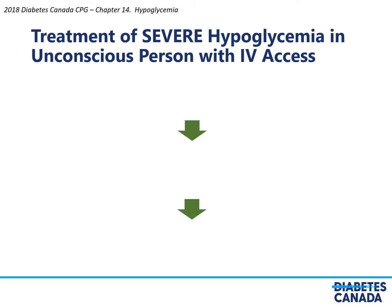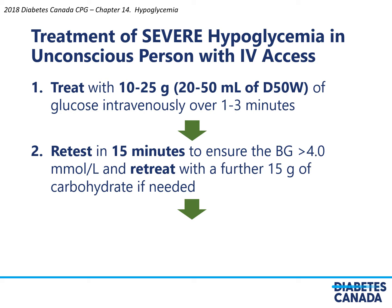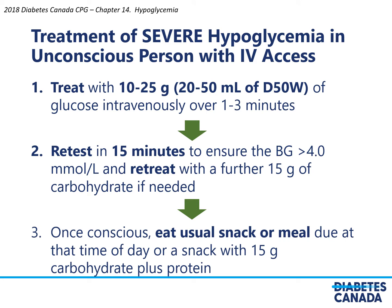Treatment of severe hypoglycemia in an unconscious person who has intravenous access should include 10 to 25 grams of glucose intravenously over 1 to 3 minutes, equal to 20 to 50 ml of D50W. Retesting should occur in 15 minutes to ensure blood glucose has come up over 4, and retreat with a further 15 grams of carbohydrate if necessary. Once conscious, the patient should eat the usual snack or meal due at that time, or a snack with 15 grams of carbohydrate plus protein.